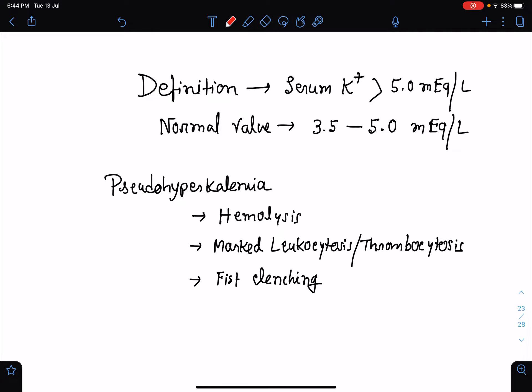Now let's see what is hyperkalemia. Hyperkalemia means serum potassium concentration above 5 mEq per liter, but some books will say more than 5.5 mEq per liter also. The normal value of serum potassium is between 3.5 to 5 mEq per liter.